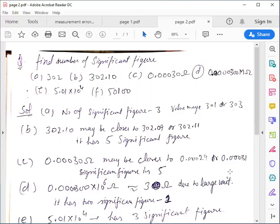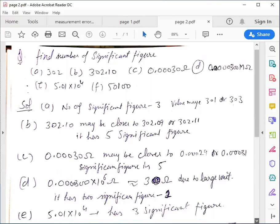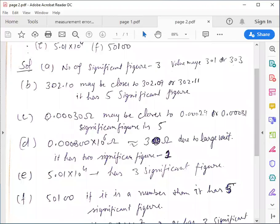Now in part C, numerical value given is 0.00030 ohm. It may be close to 0.0029 or 0.0031. Here also significant figure is 5. My result is correct up to 5 significant figures.